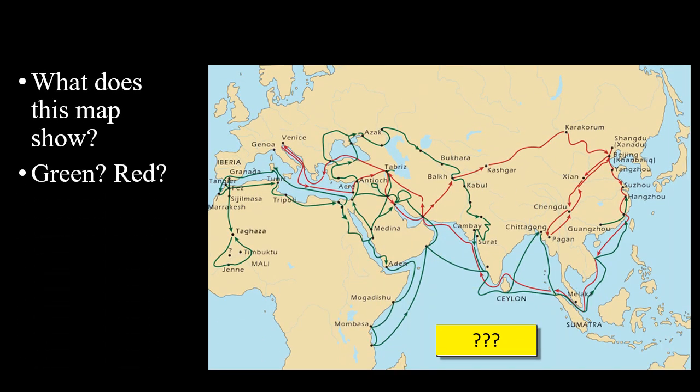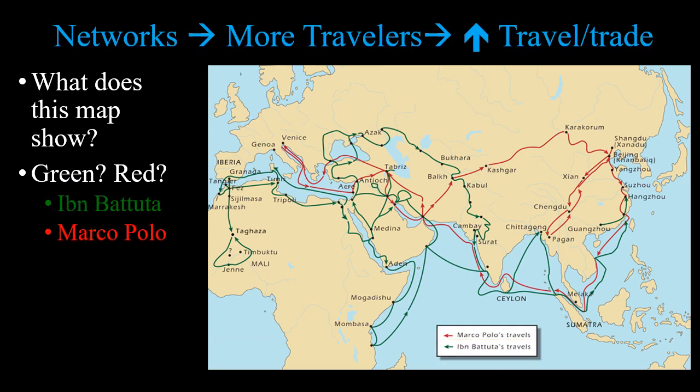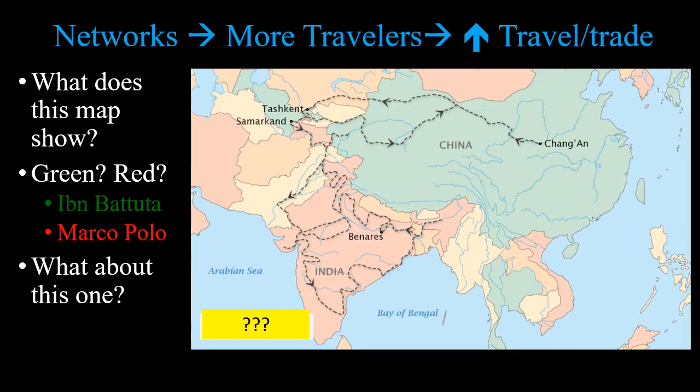With networks you get more travelers and an increase in trade. One map shows Ibn Battuta in green and Marco Polo in red. Another traveler is Xuanzang, who traveled from China into South Asia to learn more about Buddhism. It is said that Europeans first encountered what would become the cascarone when Marco Polo traveled to China and saw Chinese keeping spices and perfumes inside hollowed-out eggshells.